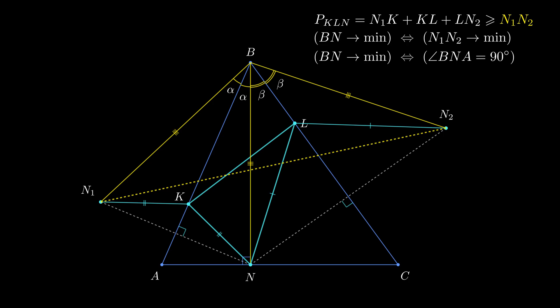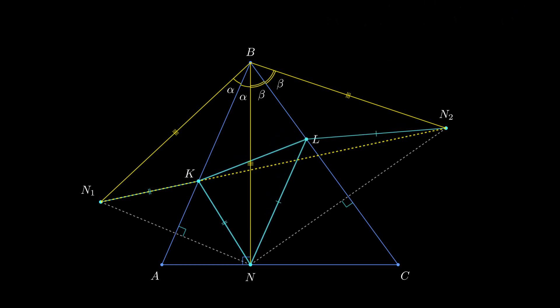Yes, the length of the polyline coincides with the length of the segment N1N2 if we place points K and L right here. This result can be further clarified. In fact, we showed that the inscribed triangle with the minimal perimeter is the only one.